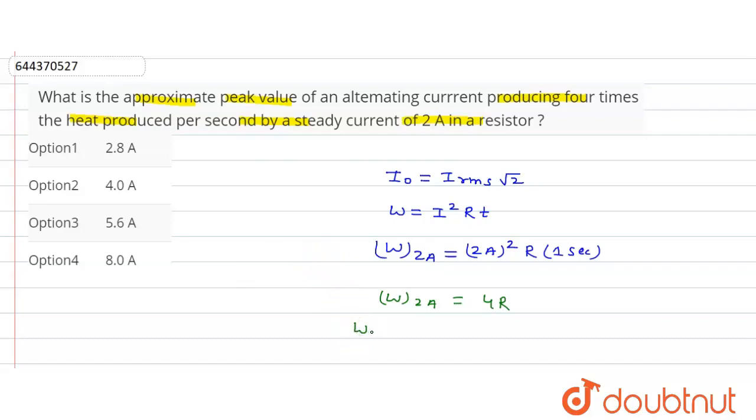The heat produced by the alternating current is 4 times the heat produced by the 2 ampere current.